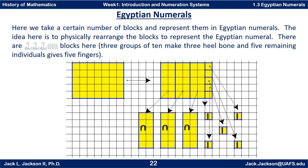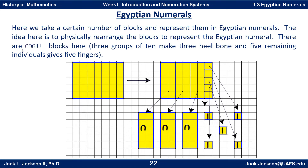So here we take a certain number of blocks and represent them in Egyptian numerals. The idea is to physically arrange the blocks. There are three heel bones and four staffs worth of blocks. When you represent something in a numeral, what you're really doing is taking that number of individual blocks and grouping them in groups of ten for Egyptian numerals. I've drawn lines so there's a group of ten — that's a heel bone. Another group of ten — heel bone. Another group of ten — heel bone. And these remaining five are individuals. This grouping is really what's going on when we deal with Egyptian numerals.